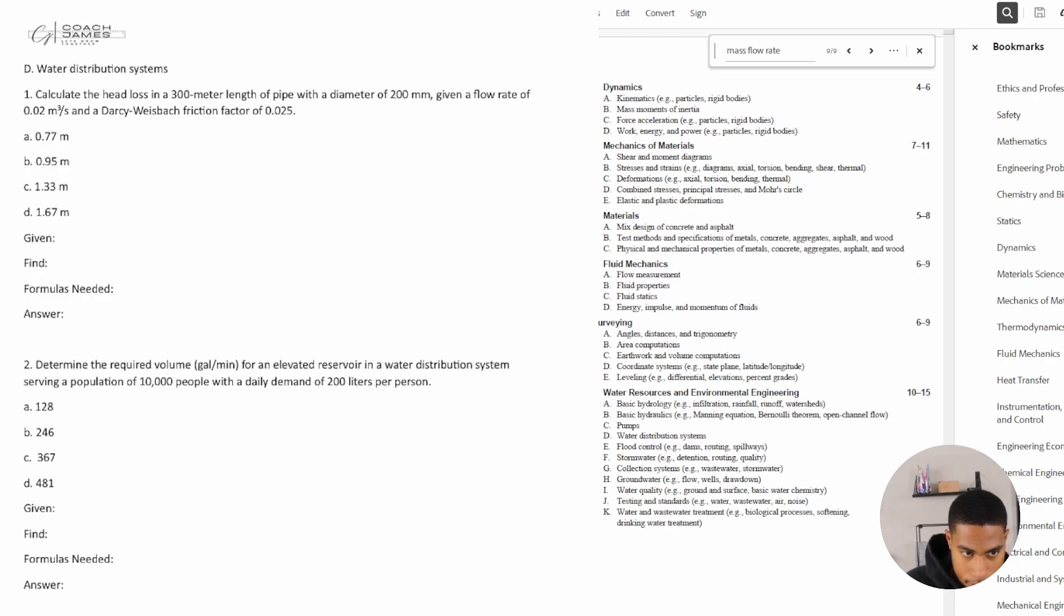Okay, so what information are we given to start? Well, we are definitely given a lot of information. So we got length and diameter of the pipe, we also have a friction factor, which is the Darcy-Weisbach friction factor, and then we are given a flow rate.